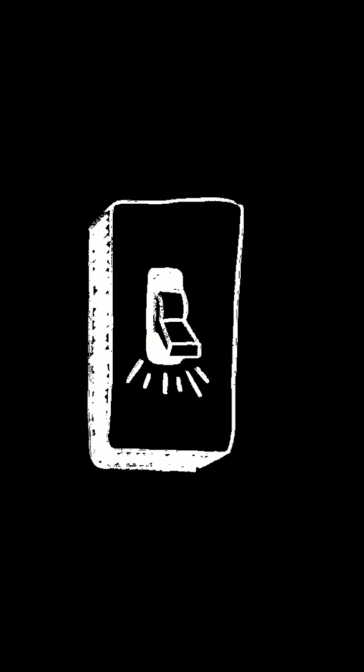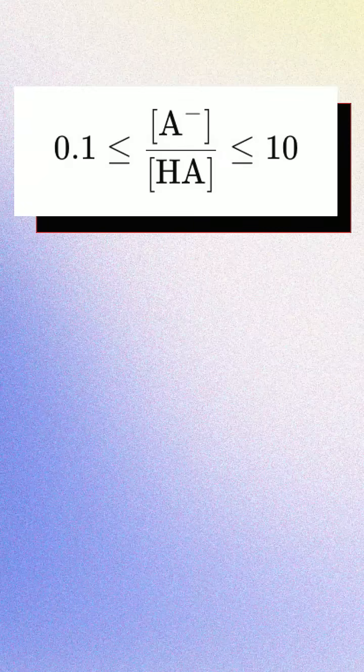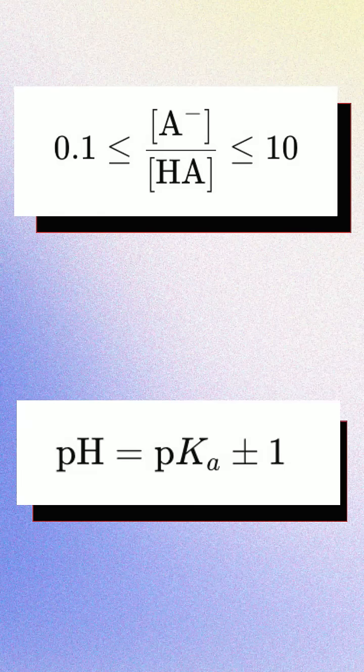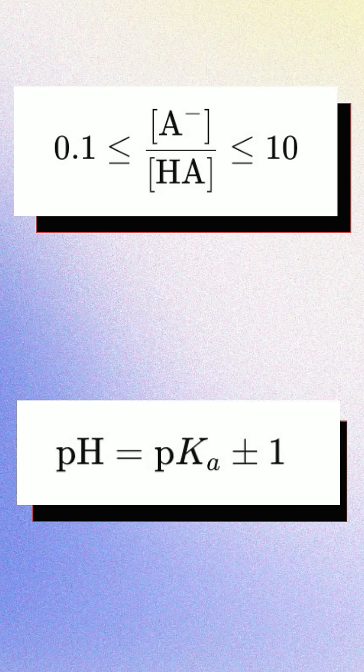But buffers aren't just on or off. There's a range where they work well, and that happens when the ratio of the concentrations of the buffer components is somewhere between 0.1 and 10. In pH terms, this means the buffer is effective when the pH is within one unit of the pKa, so anywhere from minus 1 to plus 1. If the ratio drifts too far outside that range, such as if there's way more conjugate base than acid or vice versa, then the buffer loses its effectiveness.